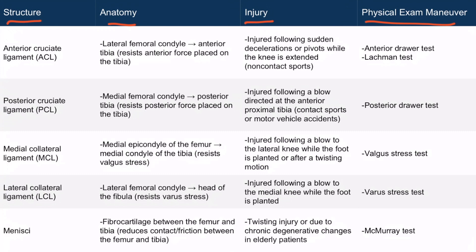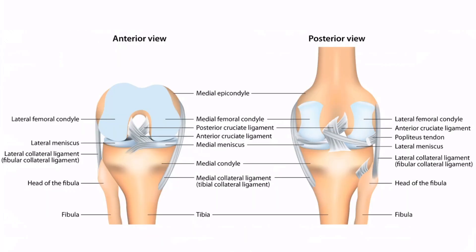Let's begin by discussing the anterior cruciate ligament, or ACL. The ACL runs from the lateral femoral condyle to the anterior tibia. If you look at the anterior view, you can see the ACL right here, and on the posterior view, we can see the ACL right here. Notice that it runs from the lateral femoral condyle to the anterior aspect of the tibia. From the anatomy, you can tell that this ligament resists anterior force placed on the tibia.